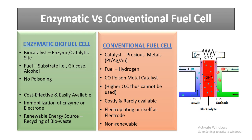In an enzymatic biofuel cell, immobilization of enzymes occurs on the electrodes, whereas in a conventional fuel cell electroplating is used or the electrode itself is the metal. In an enzymatic biofuel cell the fuel comes from renewable energy sources and we can recycle bio-waste, but in a conventional fuel cell the fuel is non-renewable.